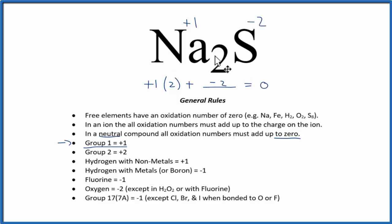So to recap, we found the oxidation number for the element that we knew, the sodium, because it's in group 1, and then we used the fact that in a neutral compound everything will add up to zero to figure out the oxidation number for sulfur.